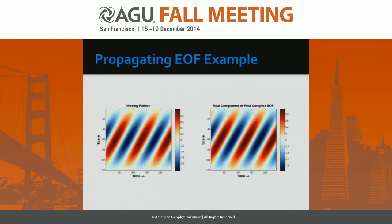Here's an example — it's a moving pattern, just a one-dimensional pattern. When you do the propagating EOFs, you can see it comes out and you recover the pattern. But that's just a scalar field.